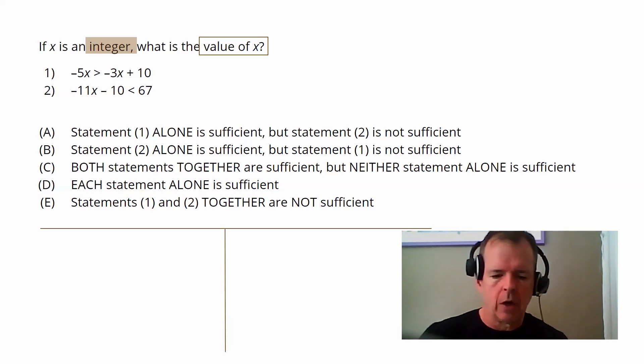I set up my T chart. I'll take the information from statement one and work with it here, statement two and work with it here. They both feel about the same difficulty level to me. So I'm going to start with statement one. So I have negative five X is greater than negative three X plus 10.